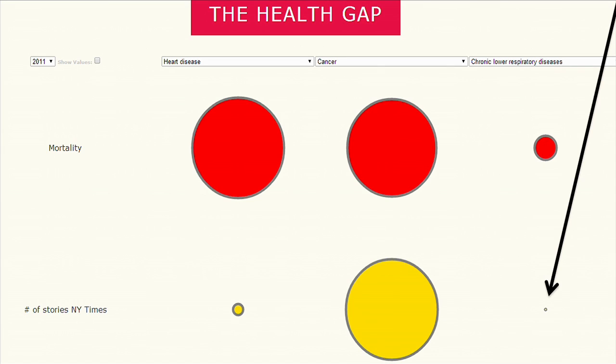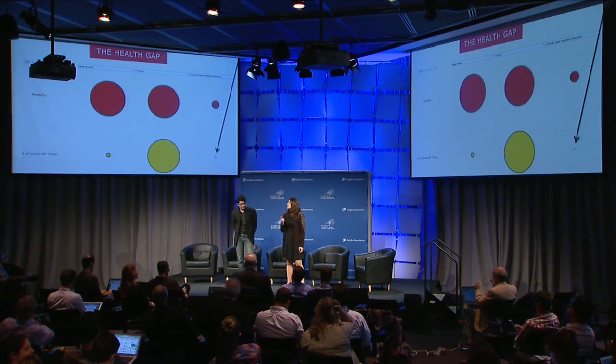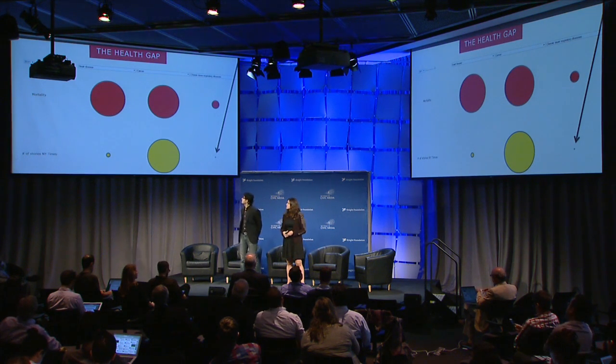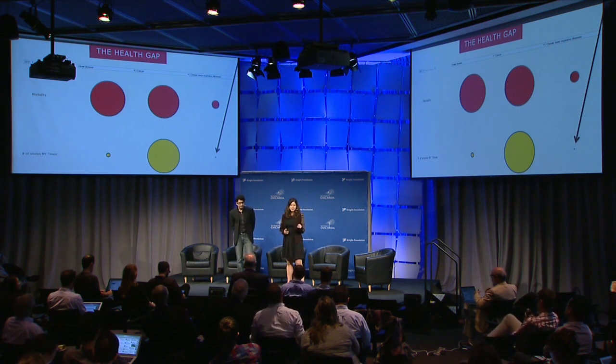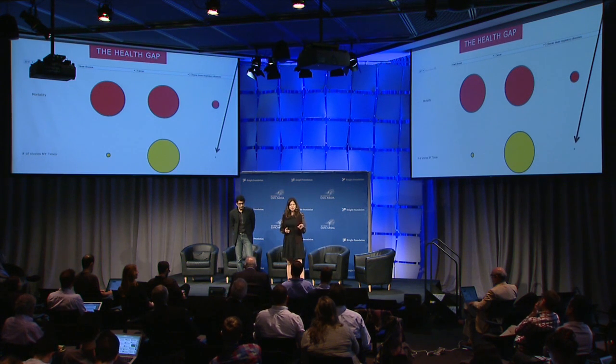Ali and I created the Health Gap — it's a prototype now that we're building. From a scroll-down menu you can choose diseases, and then the mortality in the population is visualized, along with the mentions in the New York Times. You can see very clearly that there's a gap, for example, between chronic lower respiratory diseases and the tiny number of stories mentioned in the New York Times about chronic respiratory conditions.